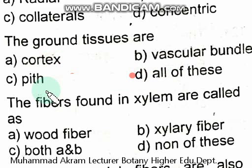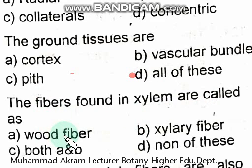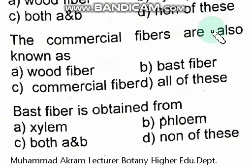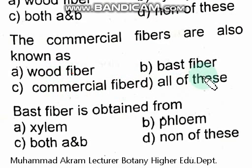The fibers in xylem are called wood fibers or xylary fibers — both options A and B are correct. Commercial fibers are also known as bast fibers.